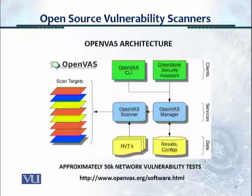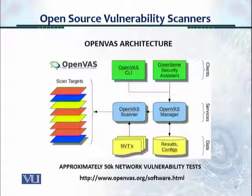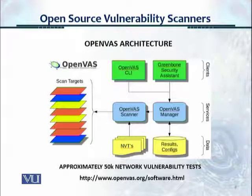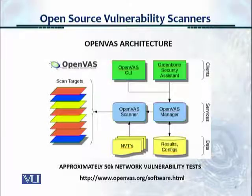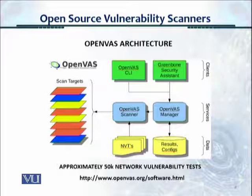This is the OpenVAS architecture. There's the CLI and the Greenbone Security Assistant, which are clients. Then you have the internal services engines: the OpenVAS scanner and the OpenVAS manager. And then you have the NVTs — Network Vulnerability Tests — along with results and configs. There are approximately 50,000 network vulnerability tests available with OpenVAS.